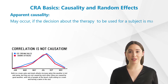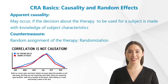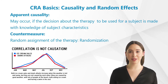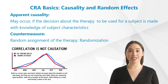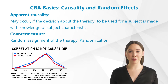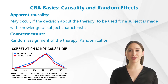Apparent causality may occur in clinical studies if the decision about the therapy to be used for a subject is dependent on the subject's characteristics. For example, in a study a new antidepressant is investigated which has no antidepressive effect, but which is known to lower blood pressure. All antidepressant study participants with hypertension are treated with the new drug, and all study participants without hypertension are treated with a placebo.